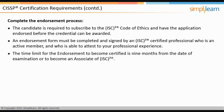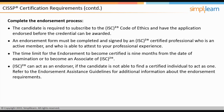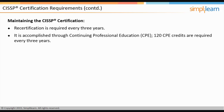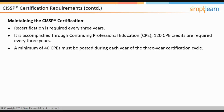Candidates must become certified or an associate of ISC² within nine months from the date of examination; otherwise, they must retake the exam. ISC² can act as an endorser if no certified individual is available. Recertification is required every three years through continuing professional education, or CPE — 120 CPE credits every three years, with a minimum of 40 CPEs posted each year of the three-year cycle.